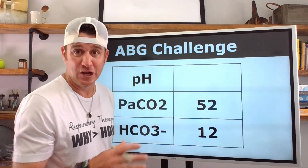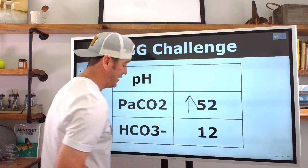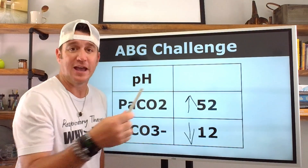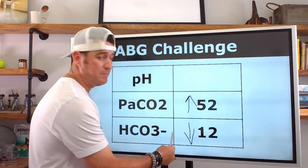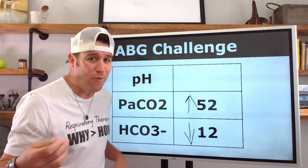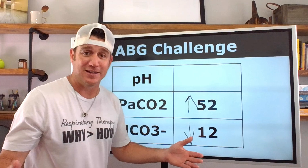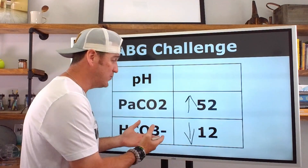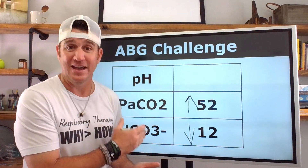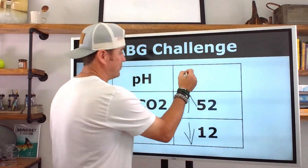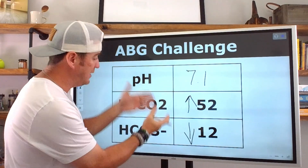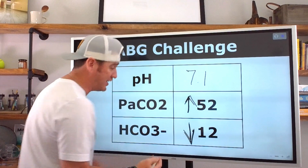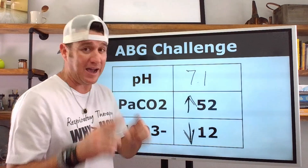Now here's one without a pH given. We have an elevated CO2 and a decreased bicarb. A high CO2 causes acidosis; a decreased bicarb causes acidosis. So what do we know? The pH is going to be acidotic because both components are driving toward an acidotic state. This is a mixed acidosis — pH is probably somewhere around 7.1. I don't even need the pH to know that, because if both values are pointing toward acidosis, it's a mixed acidosis, period.